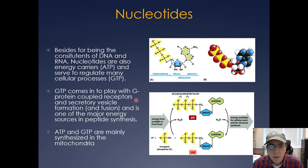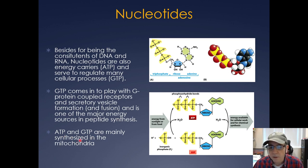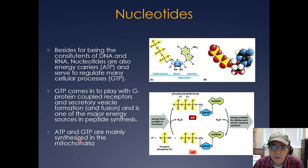GTP and G proteins are very important in regulating different aspects of the cell, from translation on the ribosome to cell signaling with G protein-coupled receptors. We'll also see G proteins come into play in the secretory pathway when secretory vesicles are formed and when they fuse. ATP and GTP are mainly synthesized in the mitochondria.